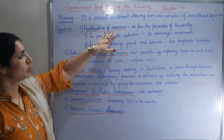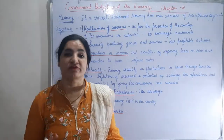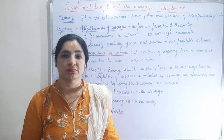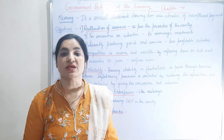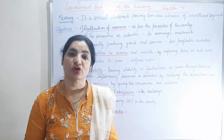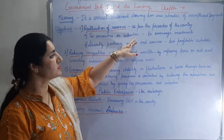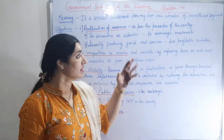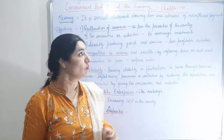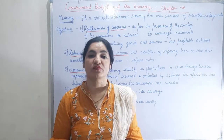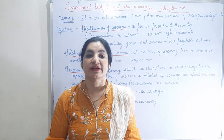The first objective is reallocation of resources. Reallocation of resources is done as per the priorities of the country. It means that if welfare activities are needed, the budget is made accordingly. It may have two deviations: first, tax concessions or subsidies — to encourage investments, tax concessions may be given to industries which are less developed. Subsidies can be given to industries manufacturing products that improve GDP, such as agricultural products. Agriculture contributes 70% to our country's GDP.